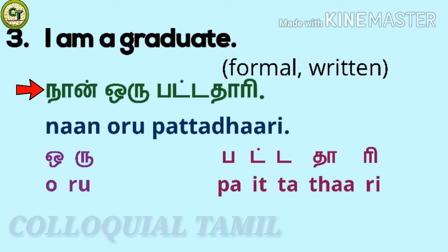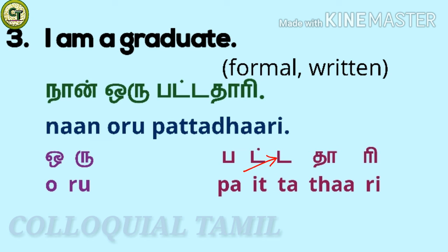To say 'I am a graduate,' you say 'naan oru patta dhari.' This is in formal written form. 'Oru' means 'a/one.' For 'patta dhari': a short song letter, t a consonant, the a short song letter, the a long song letter, re a short song letter — together 'patta dhari,' which means graduate. So: 'naan oru patta dhari.'